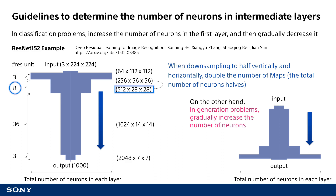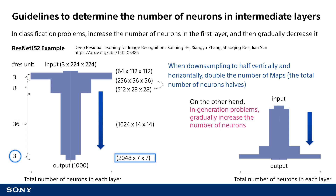The images are then downsampled to half of their size — 28 by 28 pixels — and the number of images doubles to 512. In this state, we have a convolutional neural network with 8 units and a total of 24 layers. The images are downsampled again to 14 by 14 pixels with 1,024 images, giving a convolutional layer with 36 units and a total of 108 layers. Finally, the images are downsampled to 7 by 7 pixels with 2,048 images, comprising three units and nine layers.